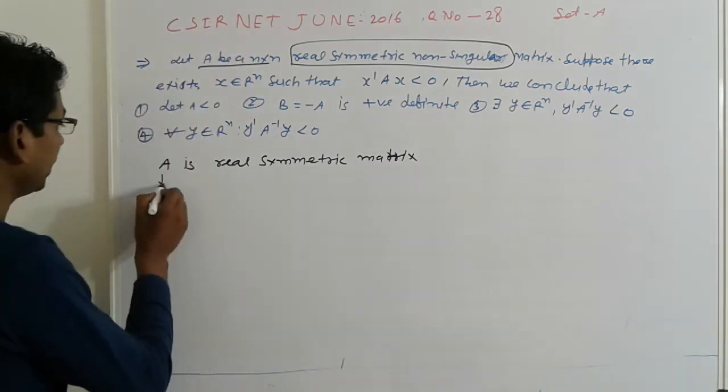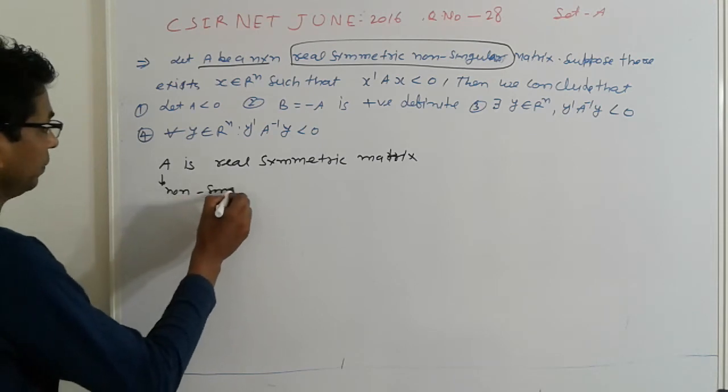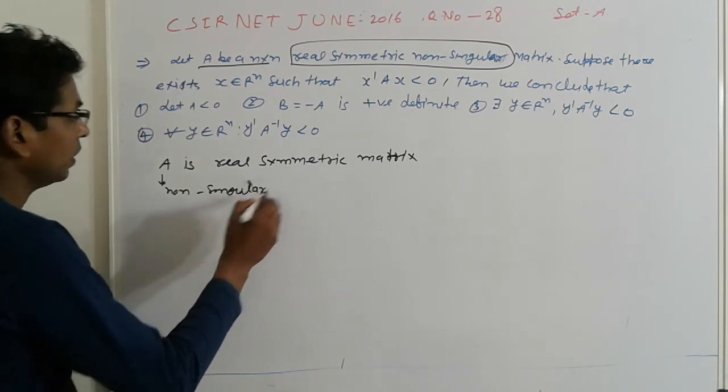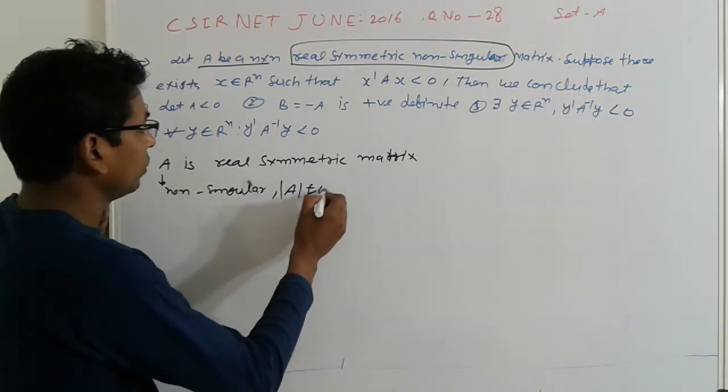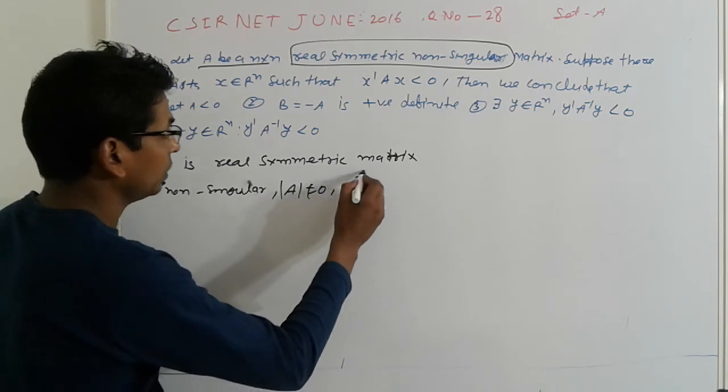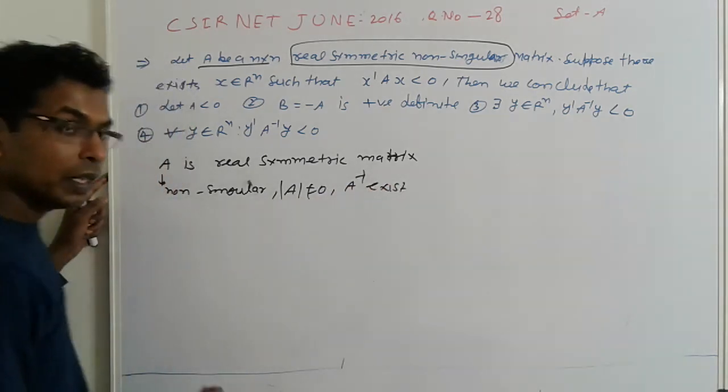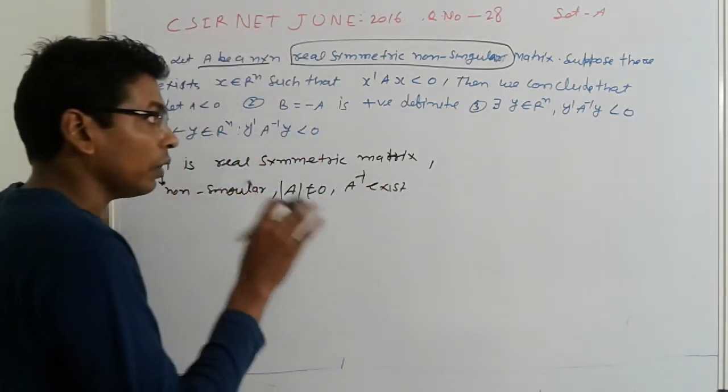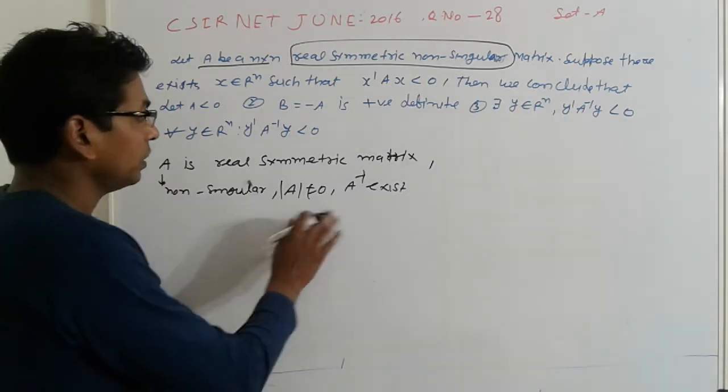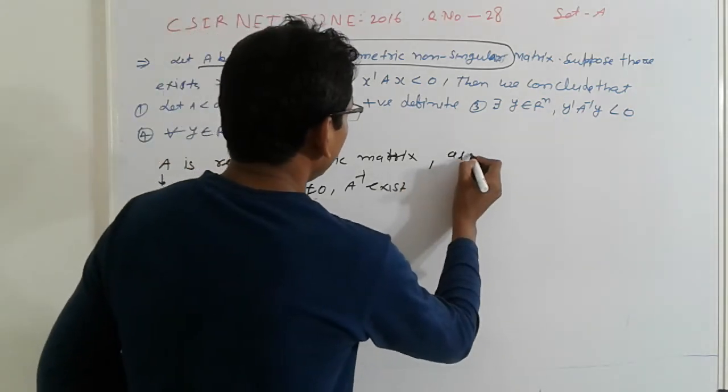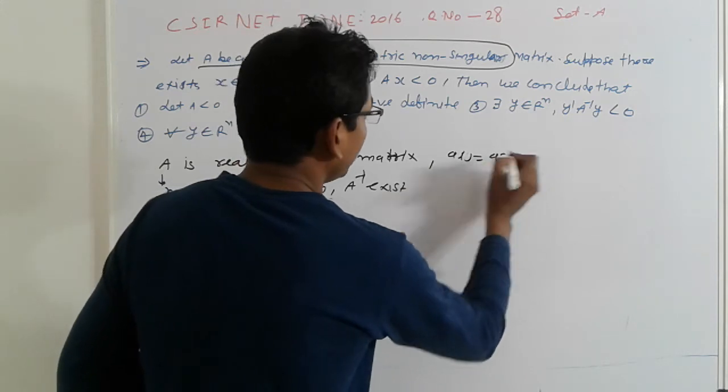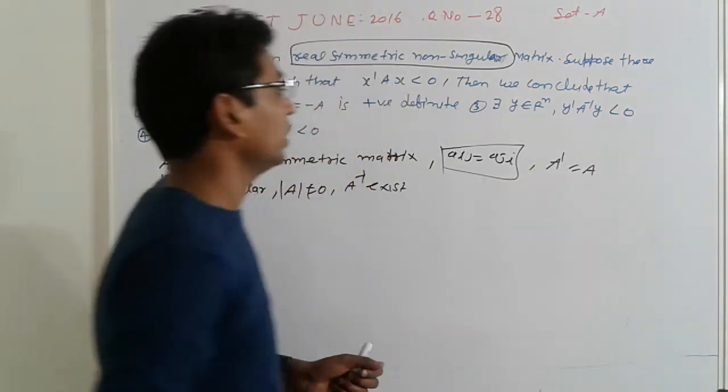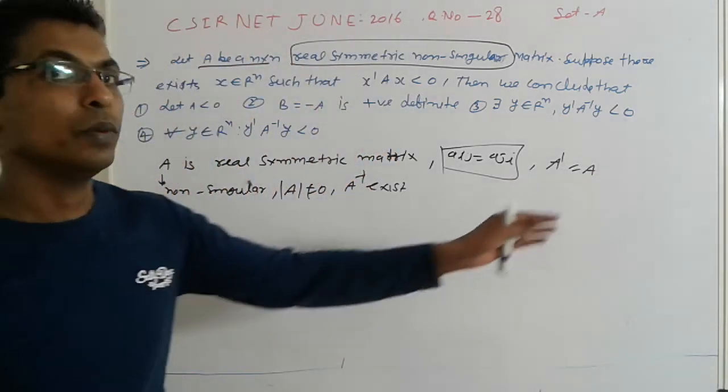Question are already given this is a non-singular, non-singular means matrix exist here for all values which is the A inverse exist. And which is A is equal to A transpose, that is symmetric properties. Otherwise A dash is equal to A transpose of A is equal to matrix A.